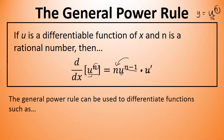The general power rule can be used to differentiate functions such as f of x equals 3x minus 5 to the seventh power. In this situation, the u is 3x minus 5, and the n is 7.